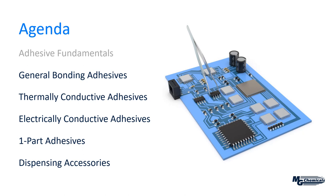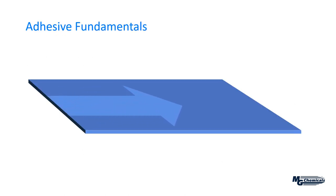Let's start with adhesive fundamentals by looking at the surface itself. Here we've illustrated a very smooth surface, so the surface energy is very low. If something were to sit on it, it would easily roll off. A good way to think about this is if you had to scale a wall vertically — if that wall is completely flat and there's nothing to hold, there's nothing really to stick to. It's a really difficult wall to climb.